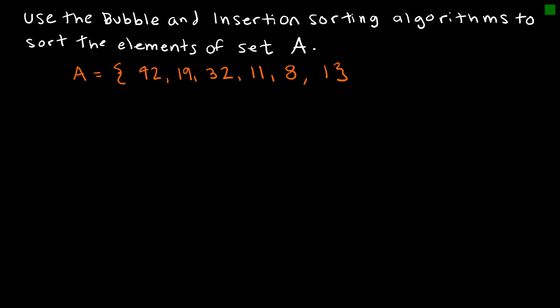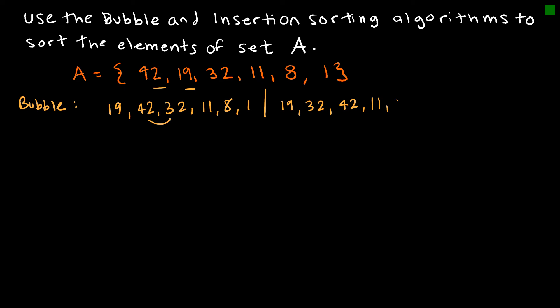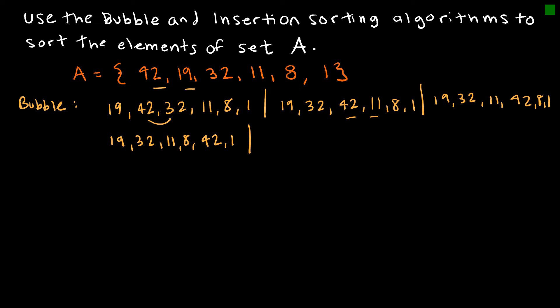Now let's look at a practice problem. We're sorting from least to greatest using bubble sort. In pass one, I compare 42 to 19 — not in the right order. Then 42 to 32 — not in the right order, giving 19, 32, 11, 42, 8, 1. Then 42 to 8 — not in the right order: 19, 32, 11, 8, 42, 1. Then 42 to 1 — not in the right order: 19, 32, 11, 8, 1, 42. That completes pass one.